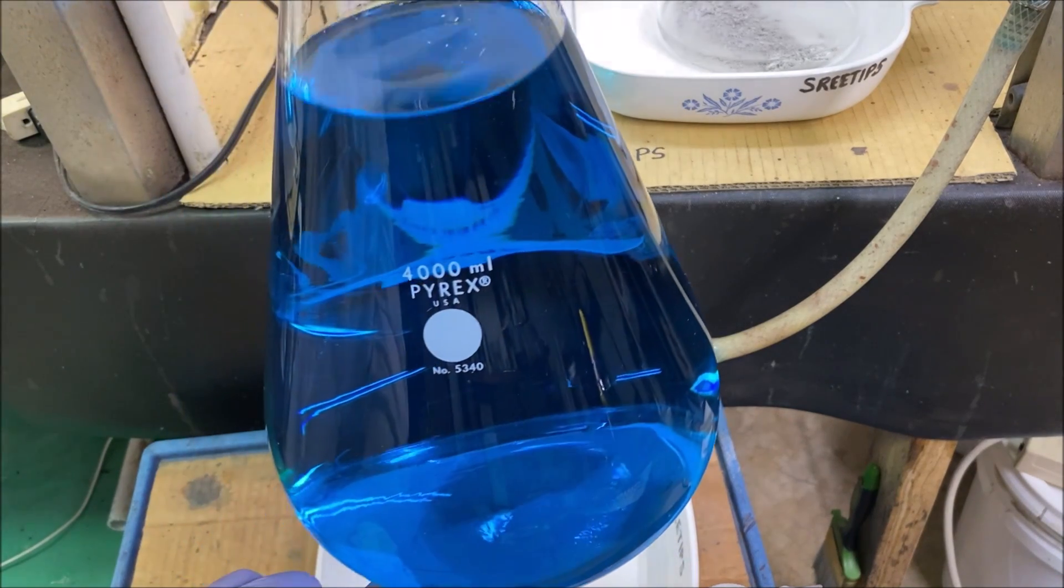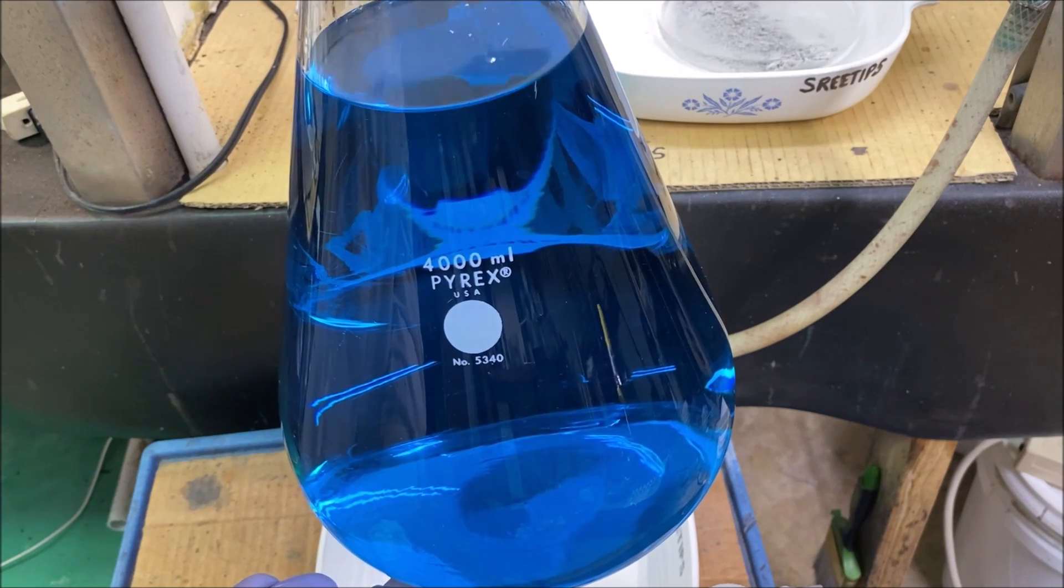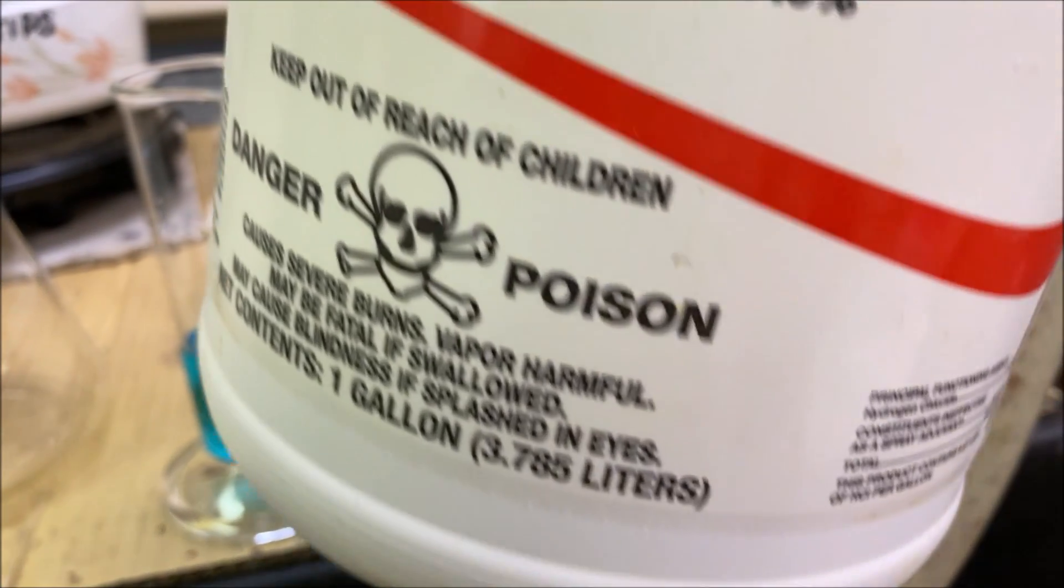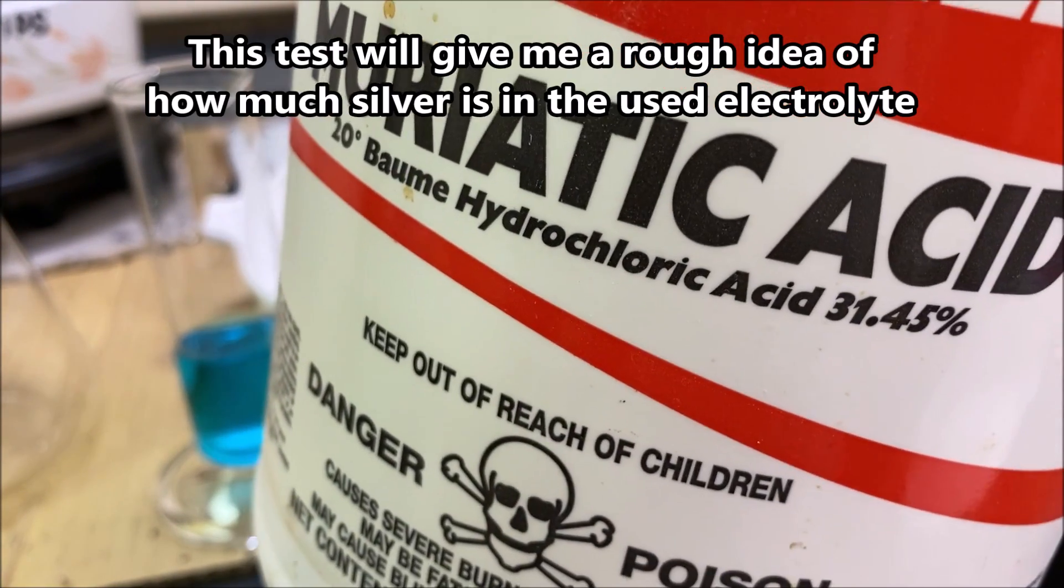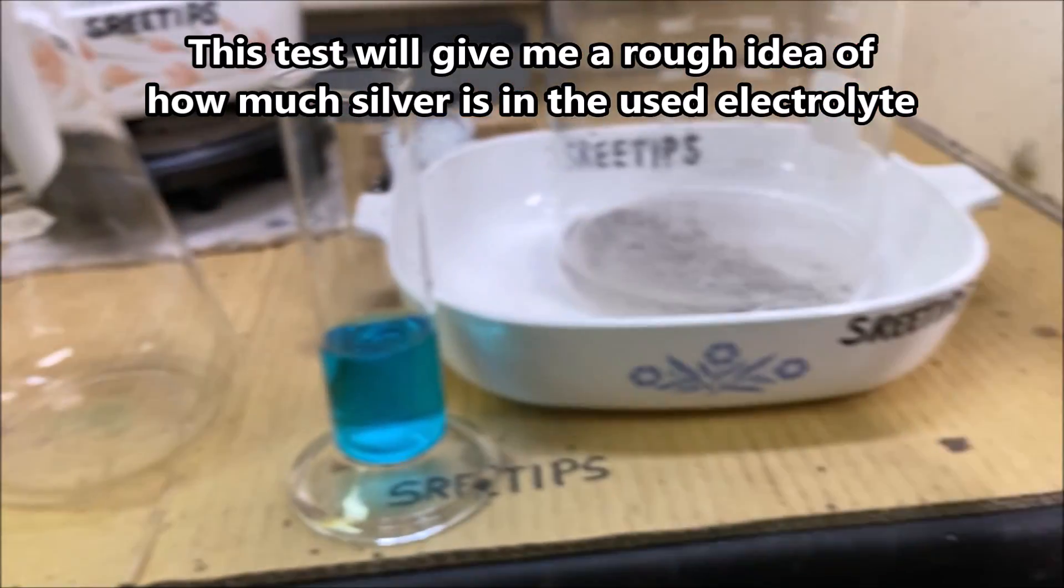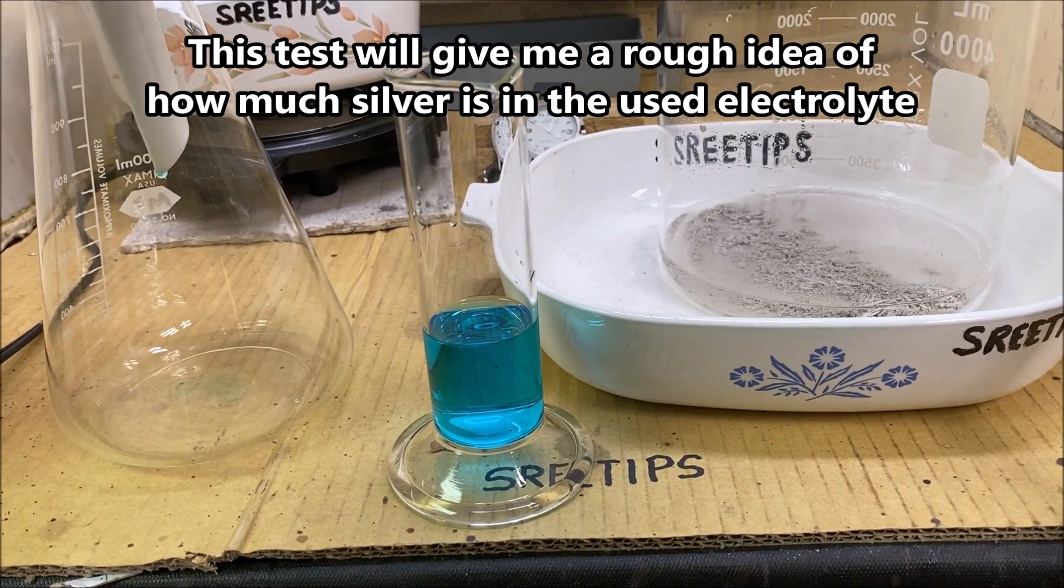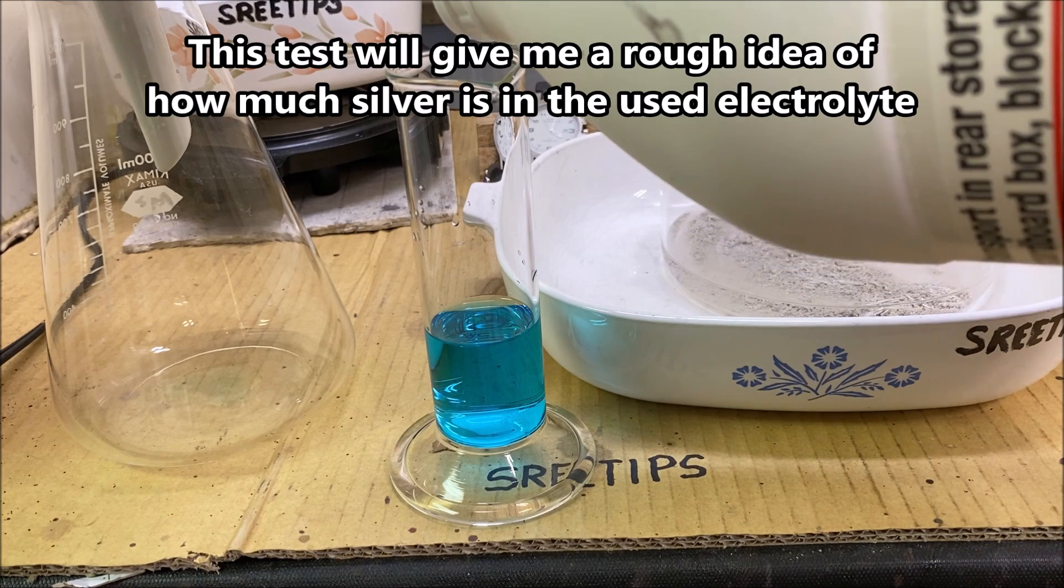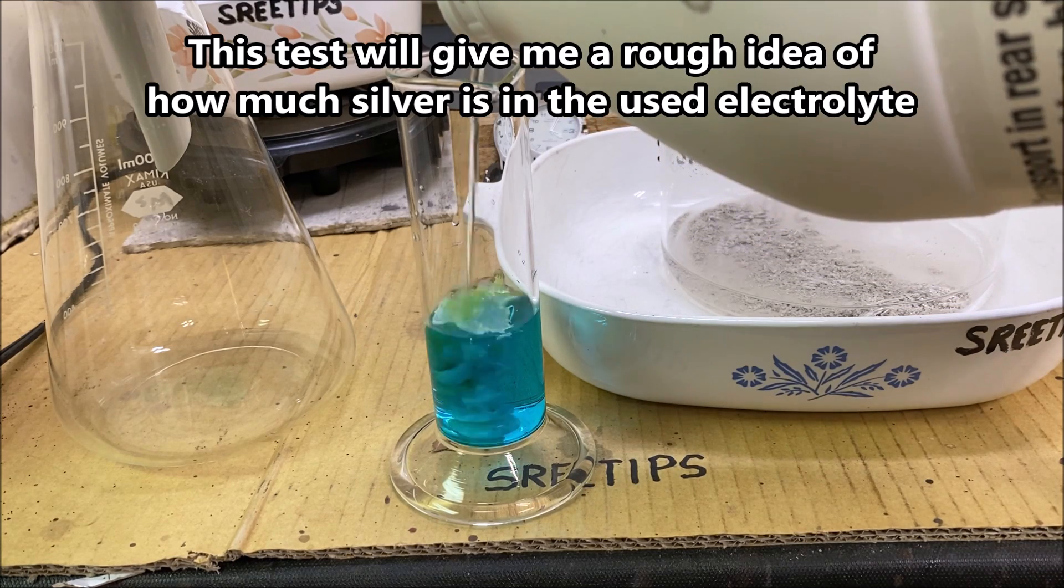This is the electrolyte from the first six liter silver cell run we're going to reuse. Just to show you, this is a sample of that electrolyte from the first silver cell run. I'm going to add hydrochloric acid in here and you'll see that there's still a ton of silver in here based on the amount of silver chloride it forms.